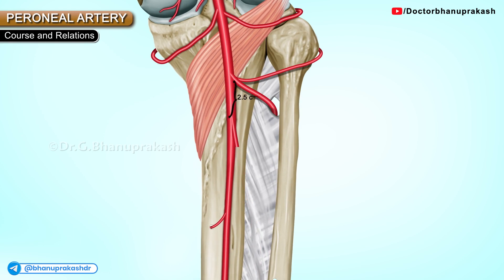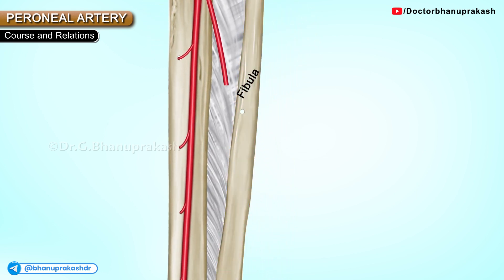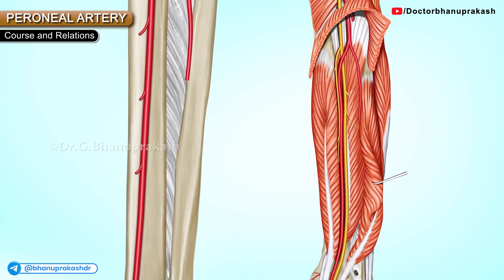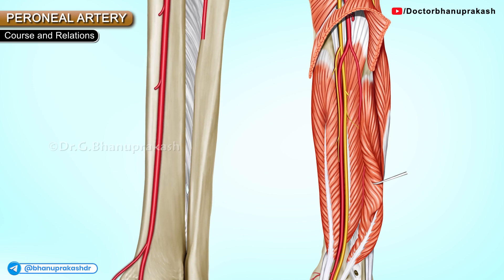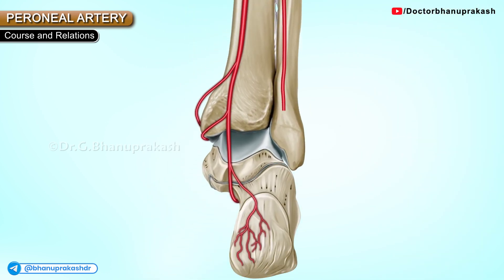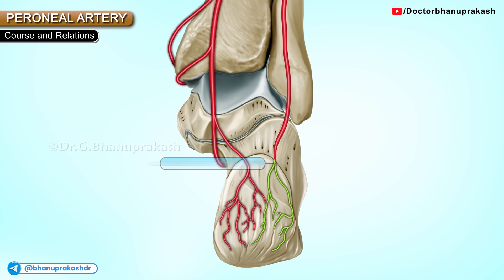It arises two and a half centimeters below the lower border of the popliteus muscle. It runs obliquely towards the fibula and then descends along the medial crest of the fibula in a fibrous canal between tibialis posterior and flexor hallucis longus muscles. It passes behind the inferior tibial fibular and ankle joints, and eventually ends on the lateral surface of the calcaneus, terminating by giving the lateral calcaneal arteries branches.